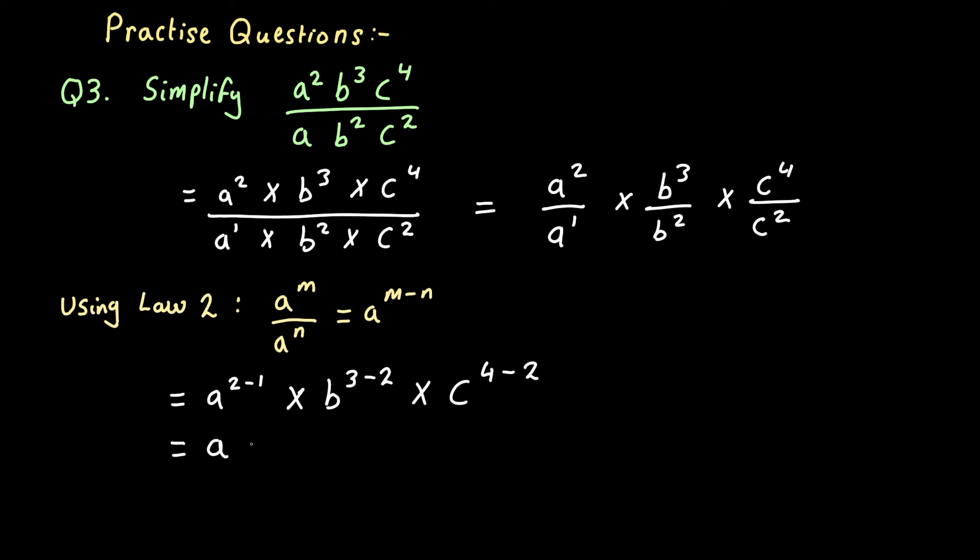We finally end up with a to the power of one, b to the power of one, multiplied by c squared. And that's our final answer.